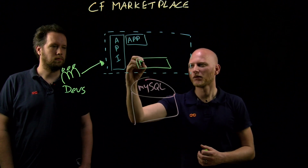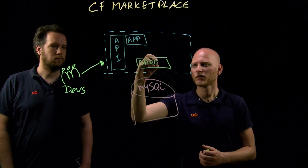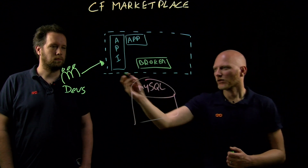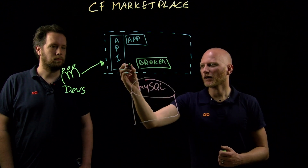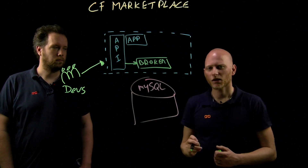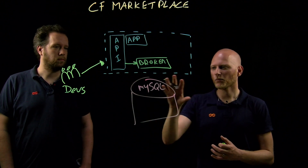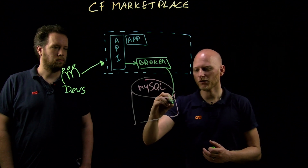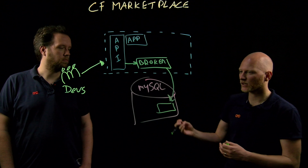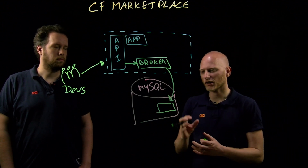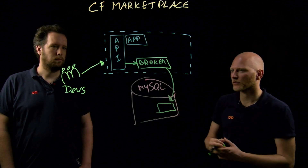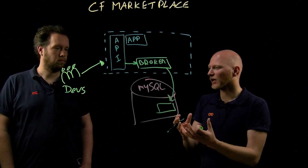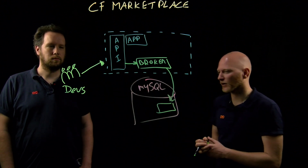The broker runs inside the platform. When you request a service from the API, the API will contact the broker. Then the broker will go out to the MySQL service and it will create a database for you — not only a database, it will also create a user, assign user permissions, and all that kind of stuff. That's all the responsibility of the broker, so you can create a database from the CF CLI very easily.